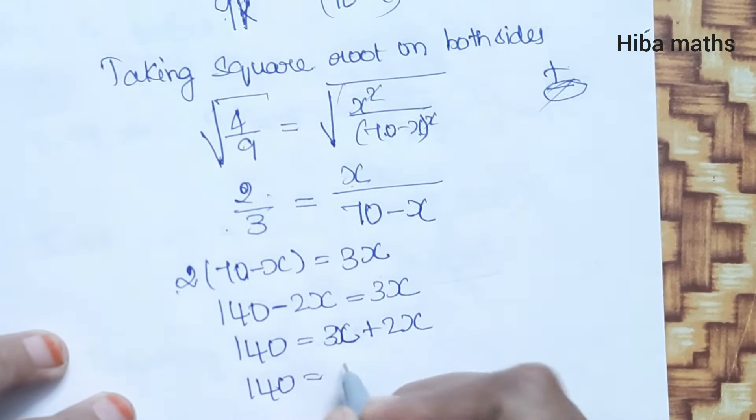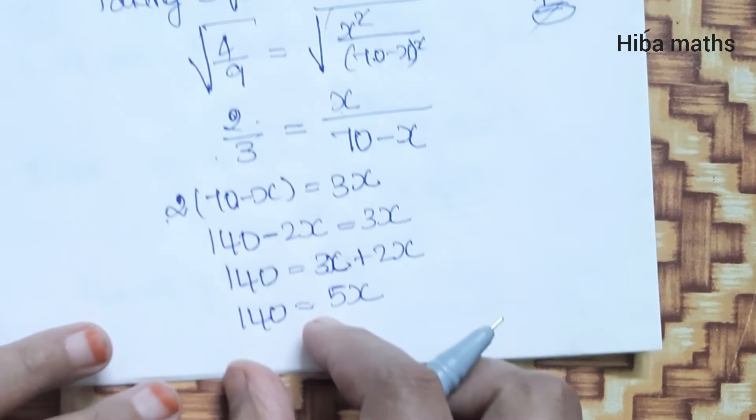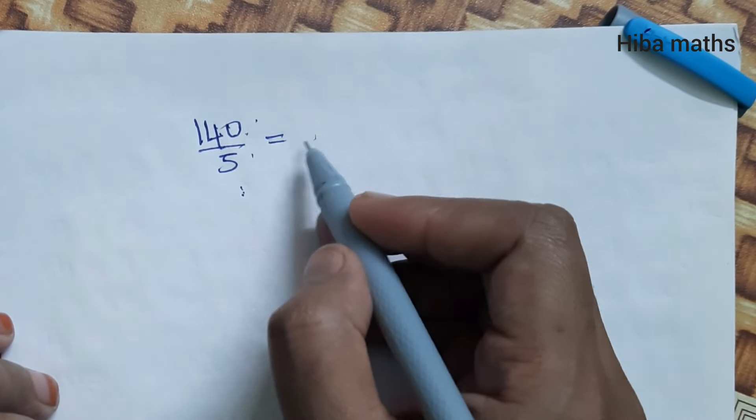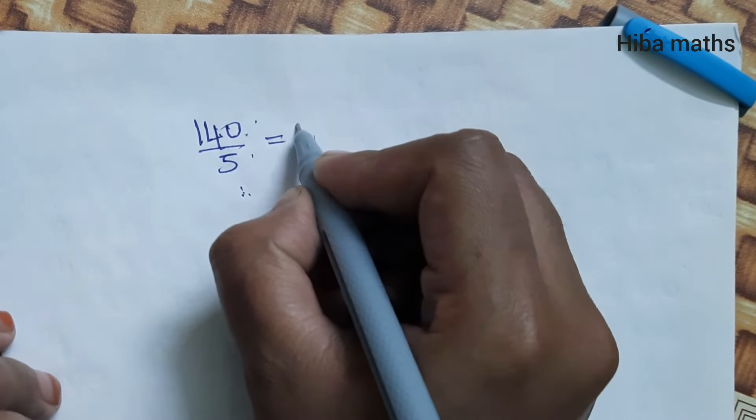140 equals 5x. Dividing both sides by 5 to get x.